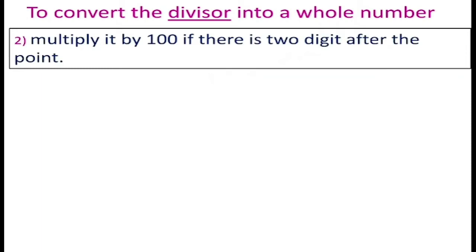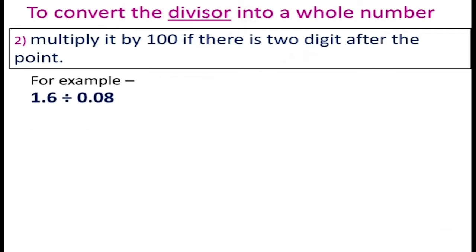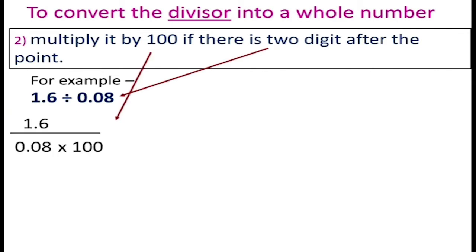Now, to convert the divisor into a whole number when there are two digits after the decimal point, you have to multiply both the numerator and denominator by 100. Here I have taken an example where 1.6 is divided by 0.08. There are two digits after the decimal point in the divisor, so you have to multiply both by 100.